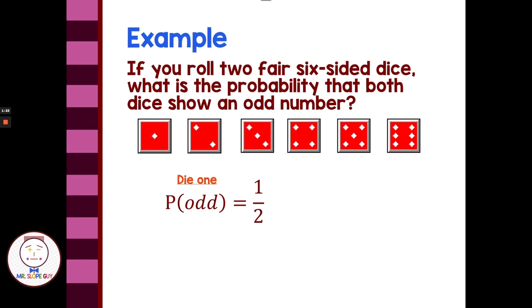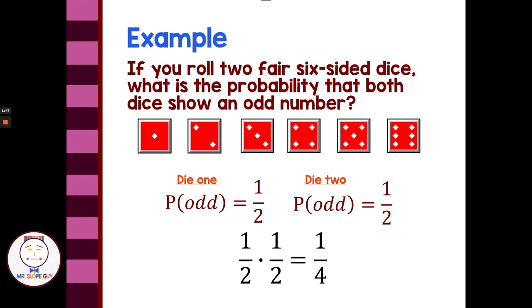And then for our second die, we have the exact same probability because we're looking for the same thing — an odd number that happens three out of every six times, or half the time. So for both independent events happening together, we take the probability of the first event times the probability of the second event: one half times one half. One times one is one, two times two is four, so one-fourth. That should happen about every one out of four times when we roll two dice — they'll both be odd numbers.